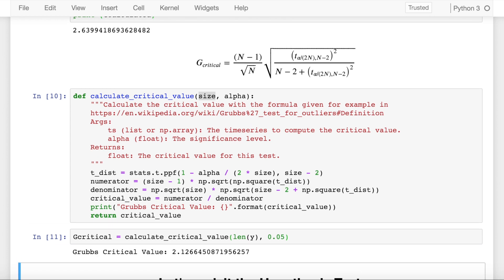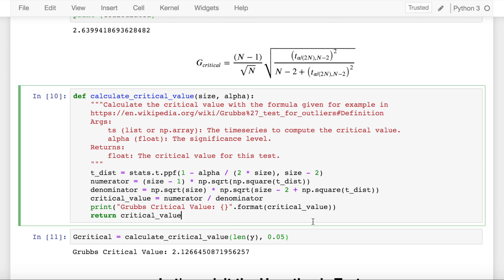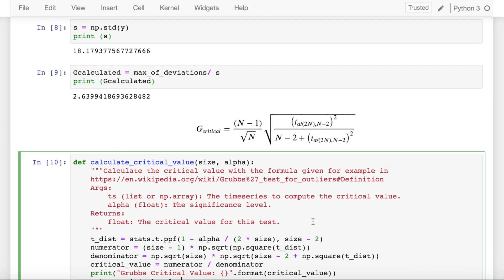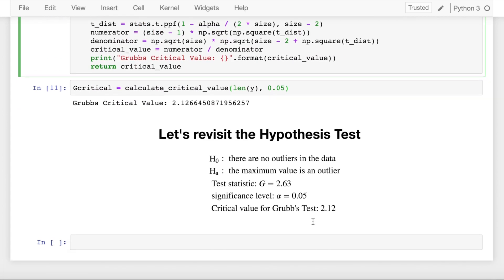So Grubbs critical value based on the calculation above gives me a value of 2.12 and the calculated value was 2.63. So my critical value is less than my calculated value. What does this imply in terms of null hypothesis is what we'll see here.